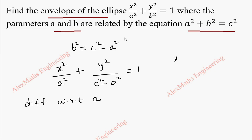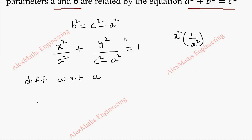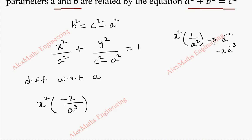So the first term is x² · (1/a²). Other than a, remaining terms are treated as constants. The differentiation will be: x² is written as it is, and 1/a² is a power of minus 2, so when we differentiate we get minus 2 · a^(−3), that's why it is −2x² / a³.